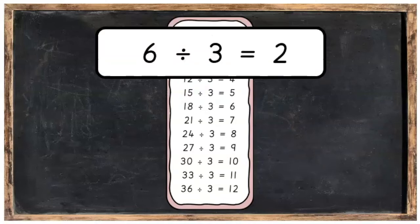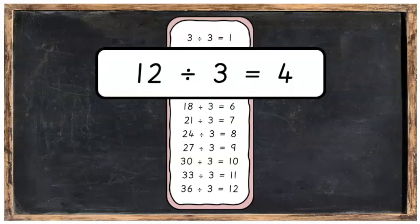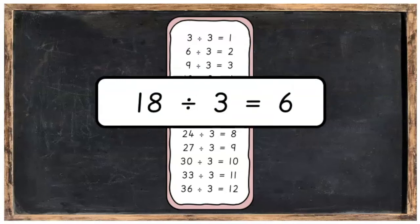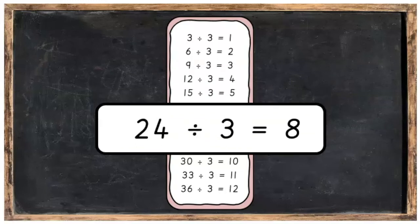Three into six goes twice. Three into nine goes three times. Three into twelve goes four times. Three into fifteen goes five times. Three into eighteen goes six times. Three into twenty-one goes seven times.